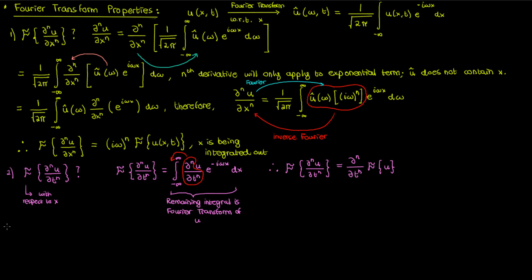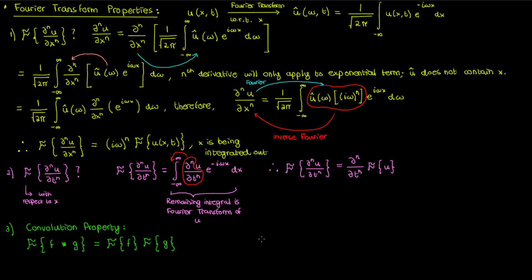The third and final property I'll discuss is the convolution property, based on the convolution theorem. It states that the Fourier transform of the convolution of two functions is the product of their individual Fourier transforms. I've stated this property without proof here, but if you want the proof you can head over to my introductory video on convolution — links in the description.